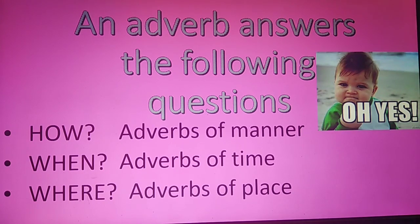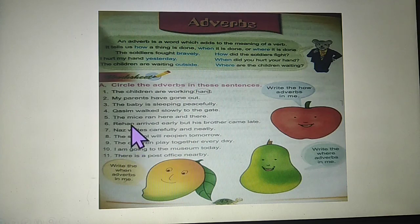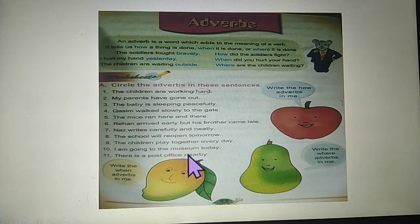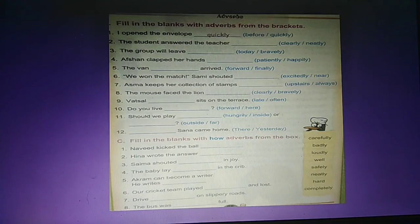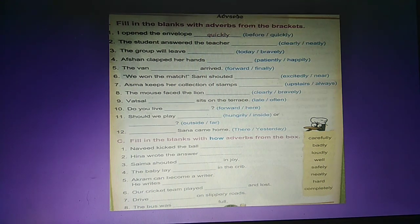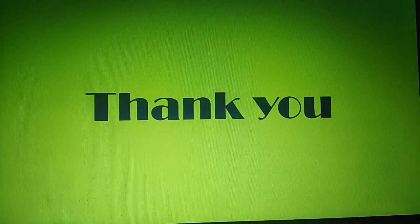I hope all of you understood all these lessons. Please do exercise number A and B. Learn all the sentences, find out the adverbs, write the correct adverbs on the fruit. Exercise number B: please circle or underline the correct adverb in the bracket and write the correct answer on the blank. I hope all of you understood today's lessons. Take care and thank you.